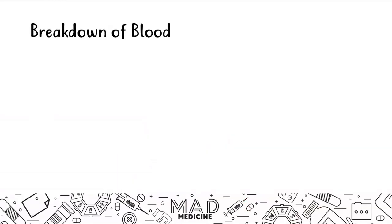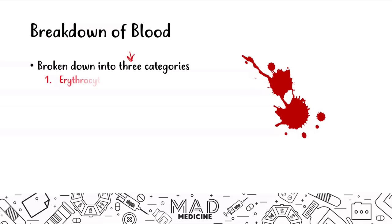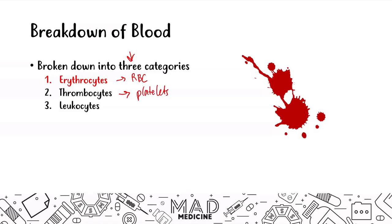Let's begin by talking about what blood consists of. There are three main types of cells in our blood, broken down into three main categories. The first category are erythrocytes, the second thrombocytes, and the third leukocytes — your red blood cells, your platelets, and your white blood cells. In leukocytes, you can also break them down to granulocytes and mononuclear or agranulocytes.